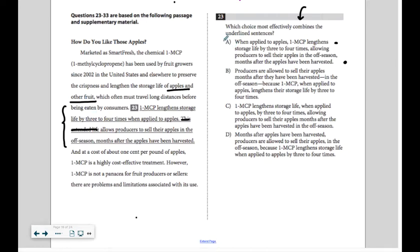So let's look at the first one. When applied to apples, 1MCP lengthens storage life by three to four times. That basically just took that one sentence, rewrote it, making when applied to apples a clause and 1MCP being the subject, and then allowing producers to sell their apples in the off-season months after the apples have been harvested. So that's a really nice job combining those sentences. I'm going to keep that. All right. Let's move on.